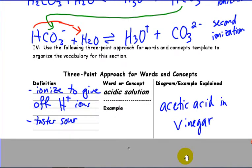So acidic solution, many different ways we can define that. One way is to think of it as something that ionizes to give off H plus ions, or it tastes sour, conducts electricity, etc.